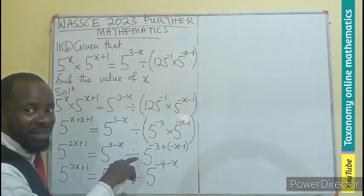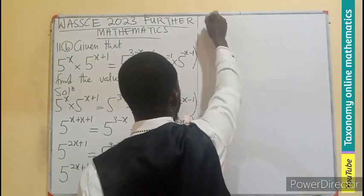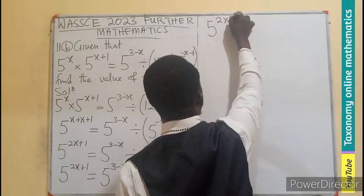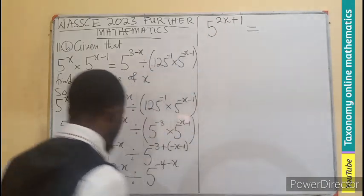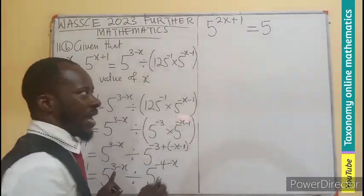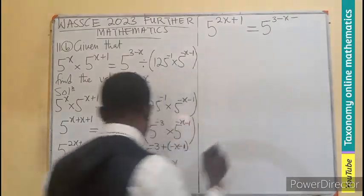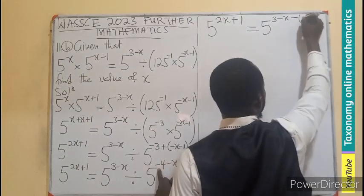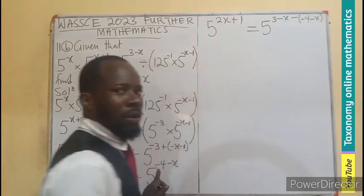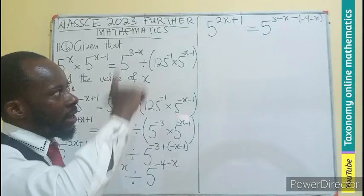Now we are seeing division. Division of the same base, we subtract the powers. So this becomes 5 exponent 2x plus 1 should be equal to 5, the first power, 3 minus x minus the second power, minus 4 minus negative x. We put them in the bracket because they are all one power coming from the second base.